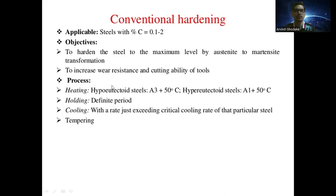The first process in conventional hardening is the heating process. Hypo-eutectoid steels are heated at A3 plus 50 degrees Celsius temperature, and hyper-eutectoid steel is heated at A1 plus 50 degrees Celsius temperature. Hypo-eutectoid steel contains around 0.18 percent carbon, while hyper-eutectoid steel contains up to 2 percent carbon.